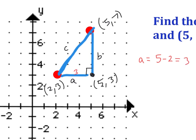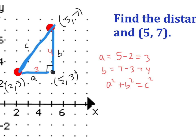The length of a is equal to 5 minus 2, so a equals 3. The length of b is equal to 7 minus 3, so b equals 4. To find the length of c, we use a squared plus b squared equals c squared — so it's (5 minus 2) squared plus (7 minus 3) squared equals c squared.